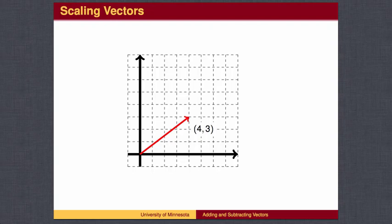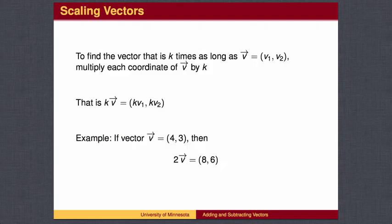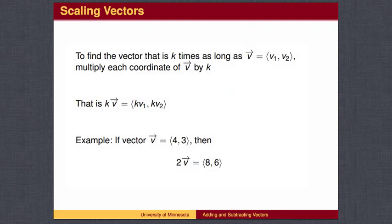To make the vector 4, 3 twice as long, all we have to do is double each coordinate. Two times the red vector is the blue vector. Mathematically, to scale a vector by a factor of k, multiply each coordinate by k.